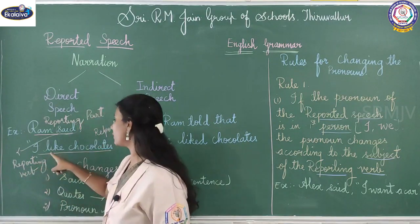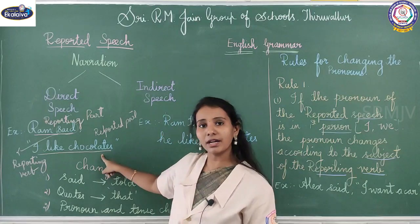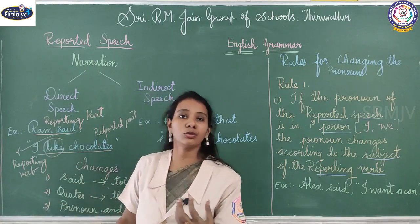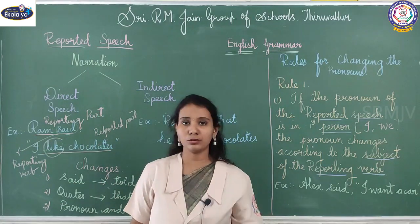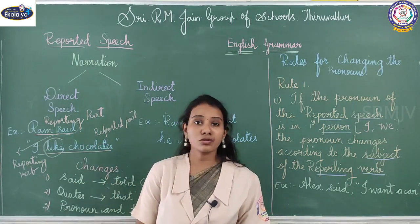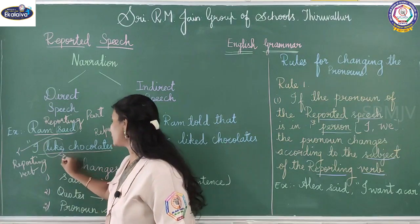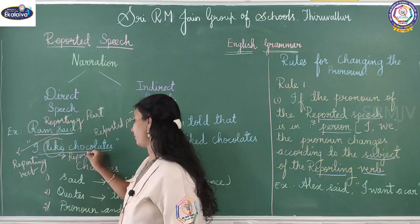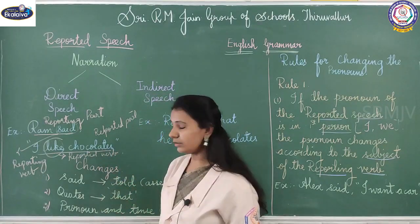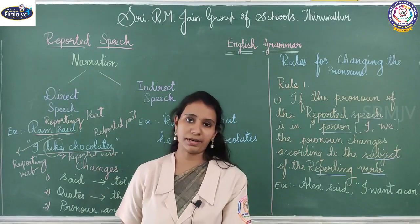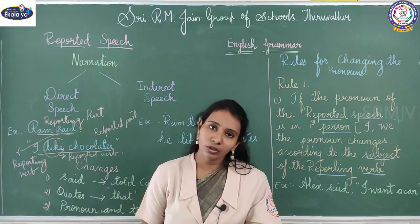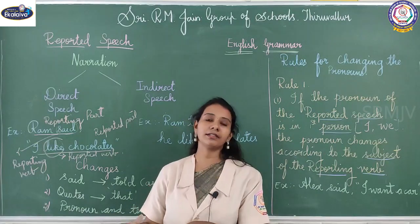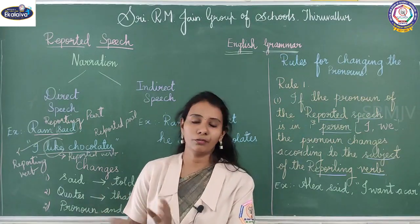The verb corresponding to the reported part will be called the reported verb. It is important that we know these terms because we are going to use them in our rules. So 'I like chocolates' is the reported part, and the verb corresponding to it is called the reported verb.